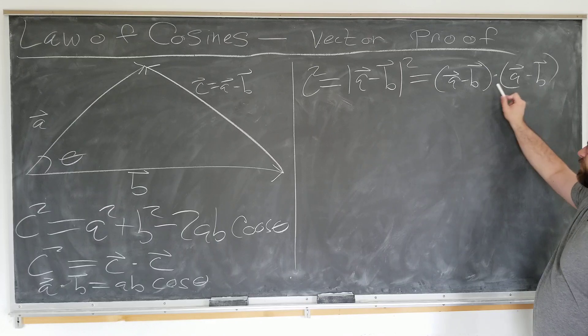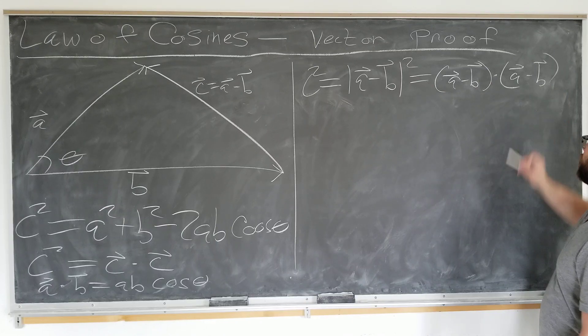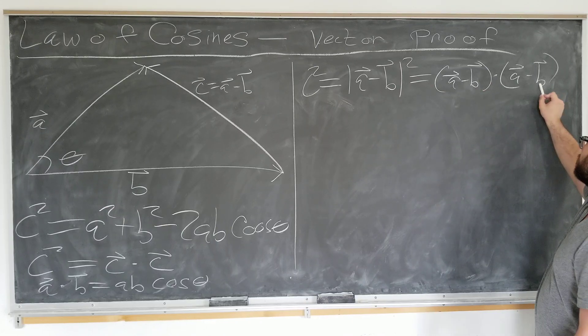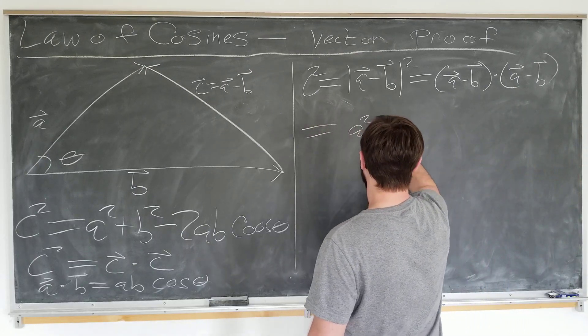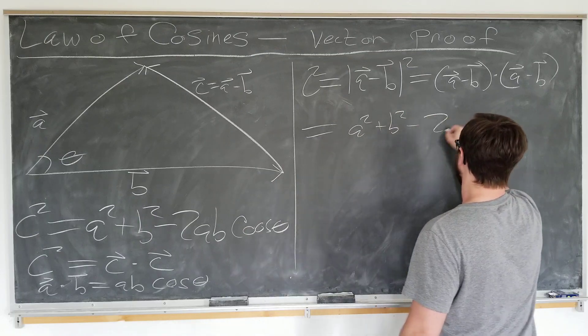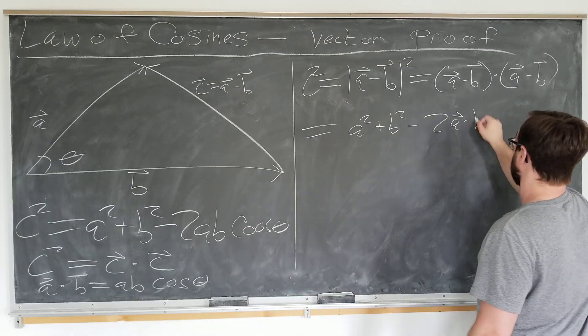We have two a's, make a squared, two b's make b squared. We have minus two times the cross terms, which commute since they're just vectors. a squared plus b squared minus two times the cross terms, 2a dot b.